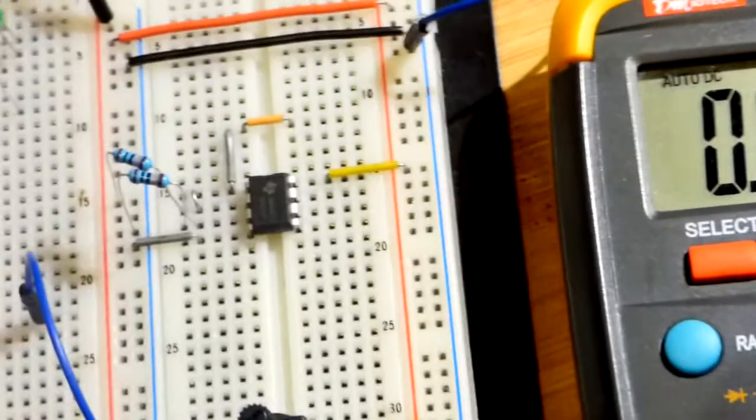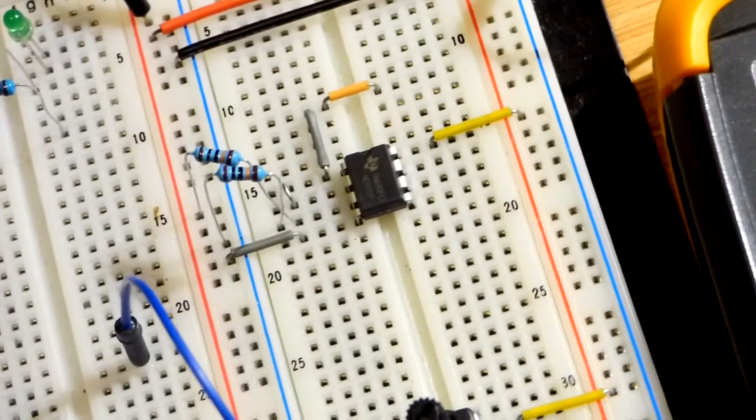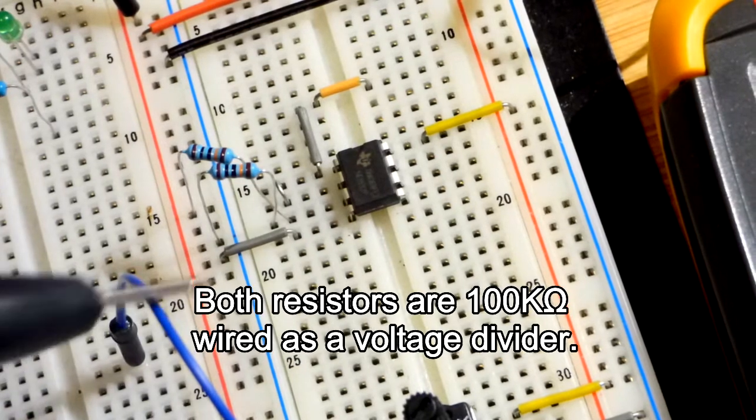I use this a lot because I don't have a split power supply. And to wire that up, all we had to do was take two resistors, make a voltage divider.